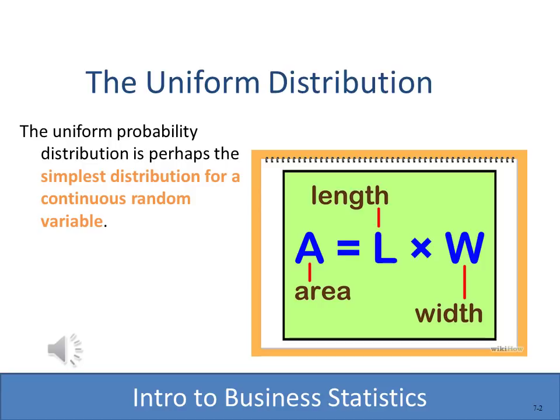The other thing we need to review when talking about a uniform distribution is the basic way to compute the area of a rectangle. You might remember from your geometry days that the area of a rectangle is simply the length times the width. That's going to be very important as we figure out probabilities within a uniform distribution.